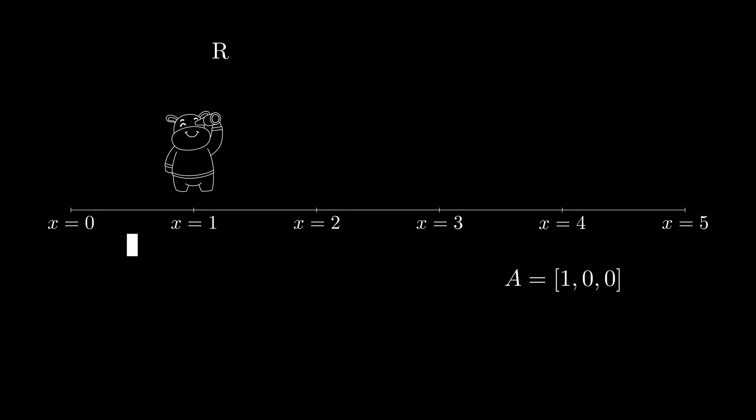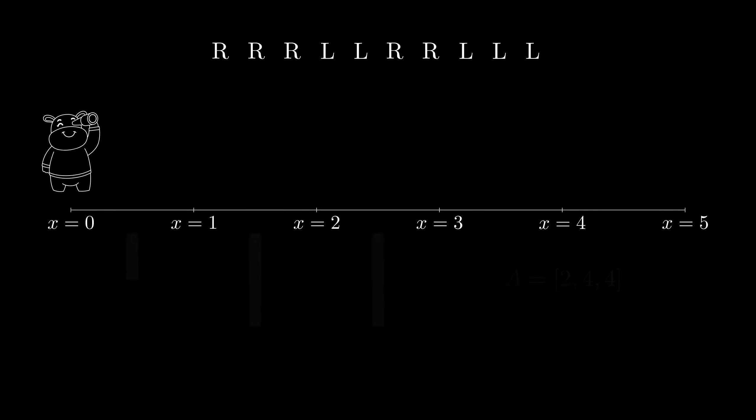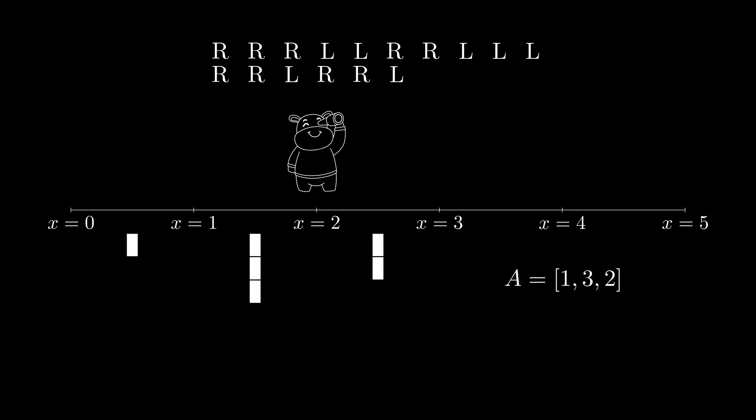Here is how the string and the array A varies as Bessie moves on the number line for the second sample. Here is a set of moves that produces another string but the same array A. There is another set of moves that produces yet another string but again the same array A.